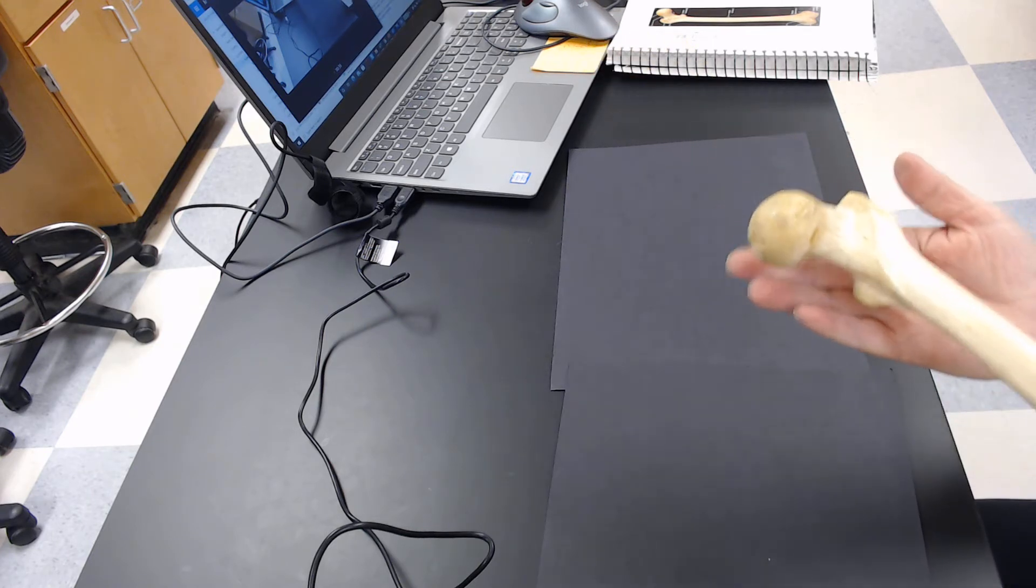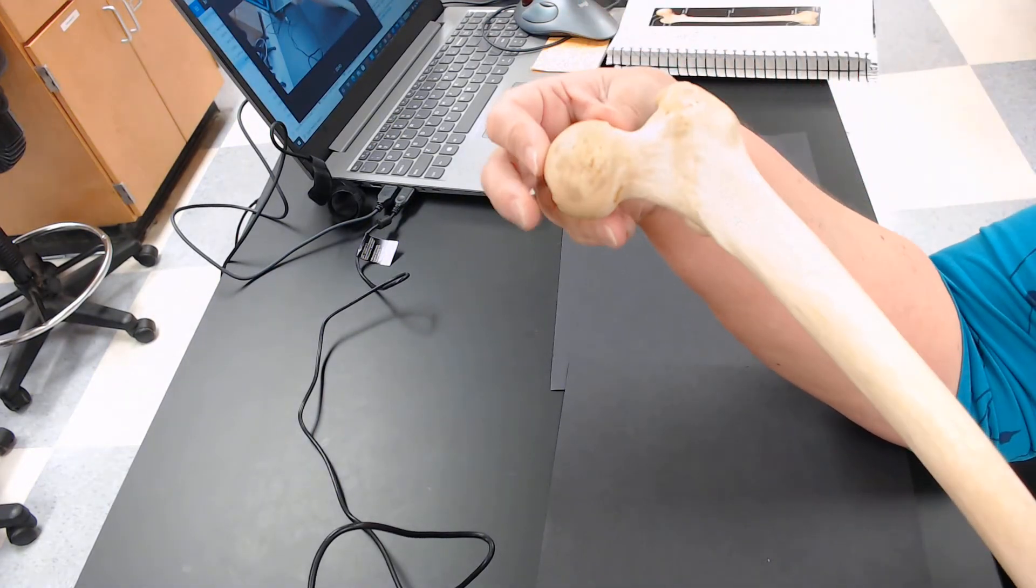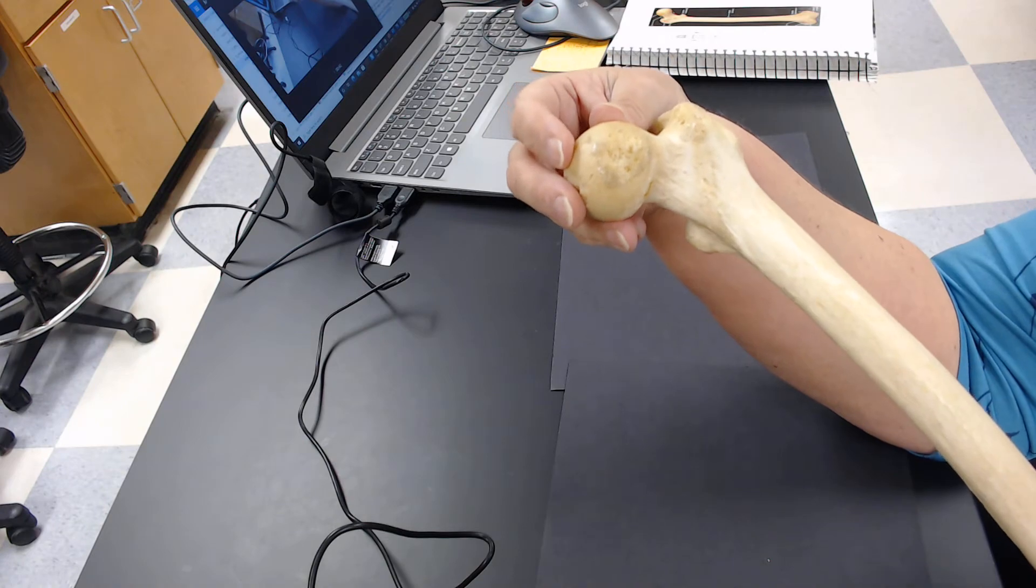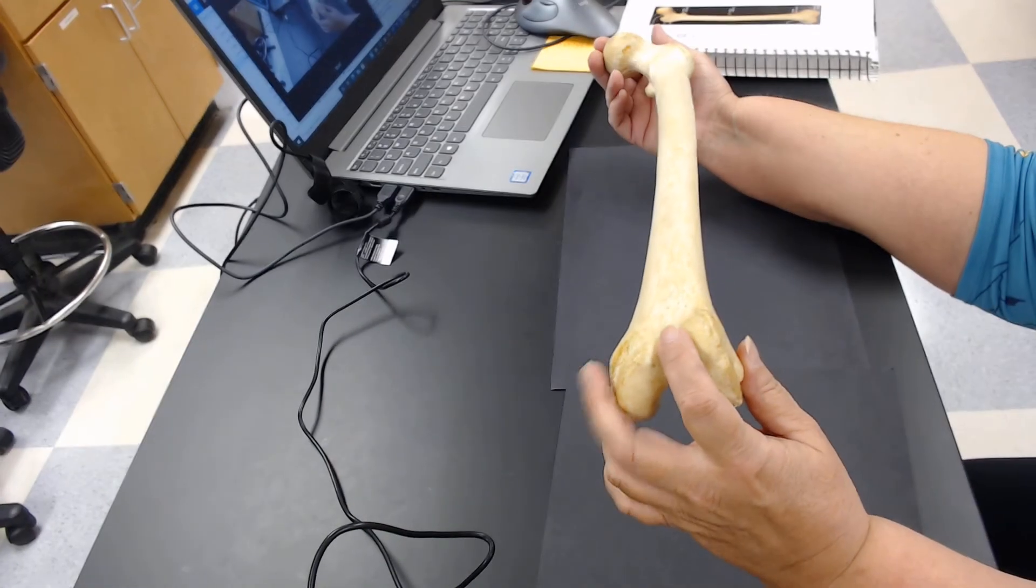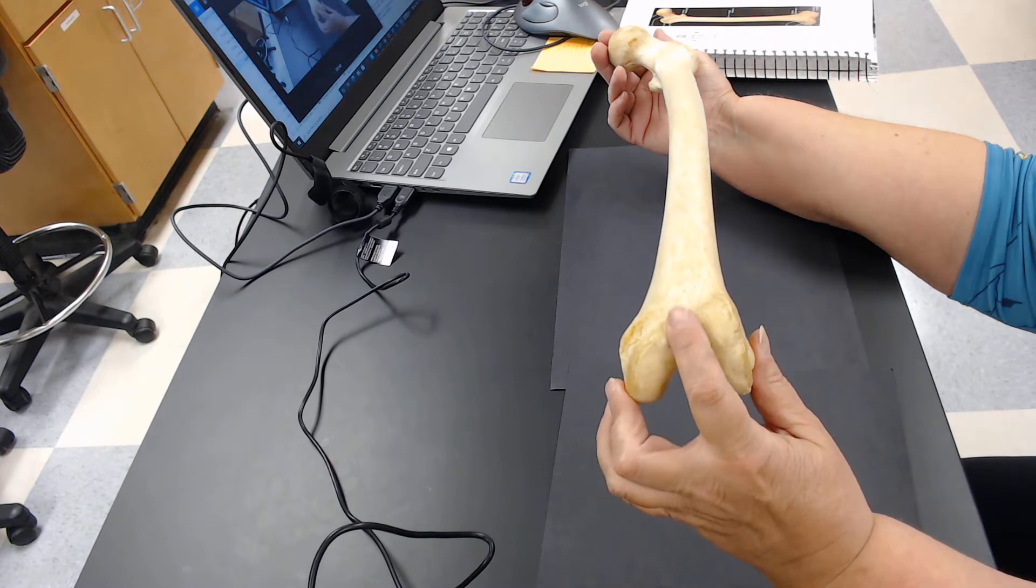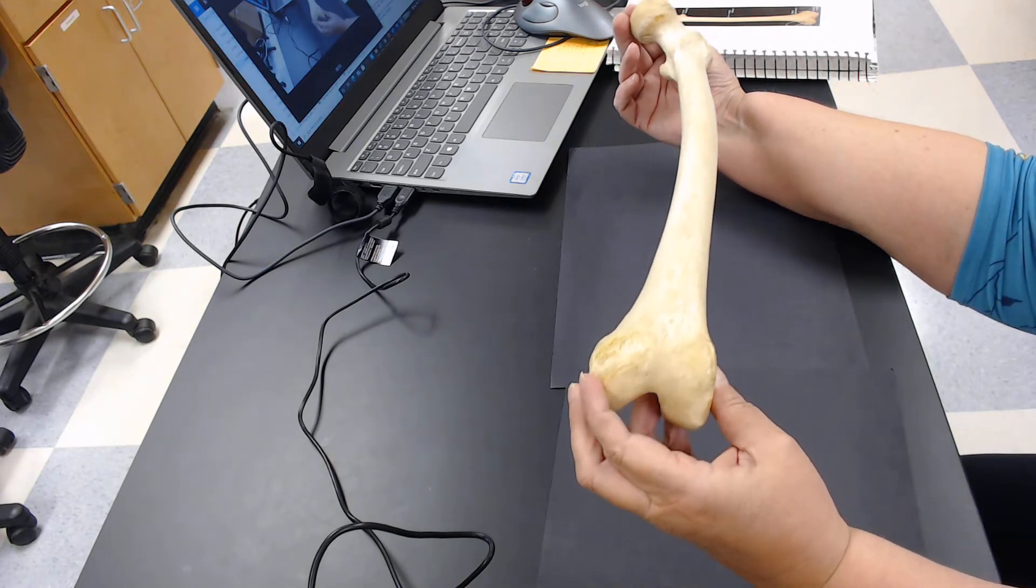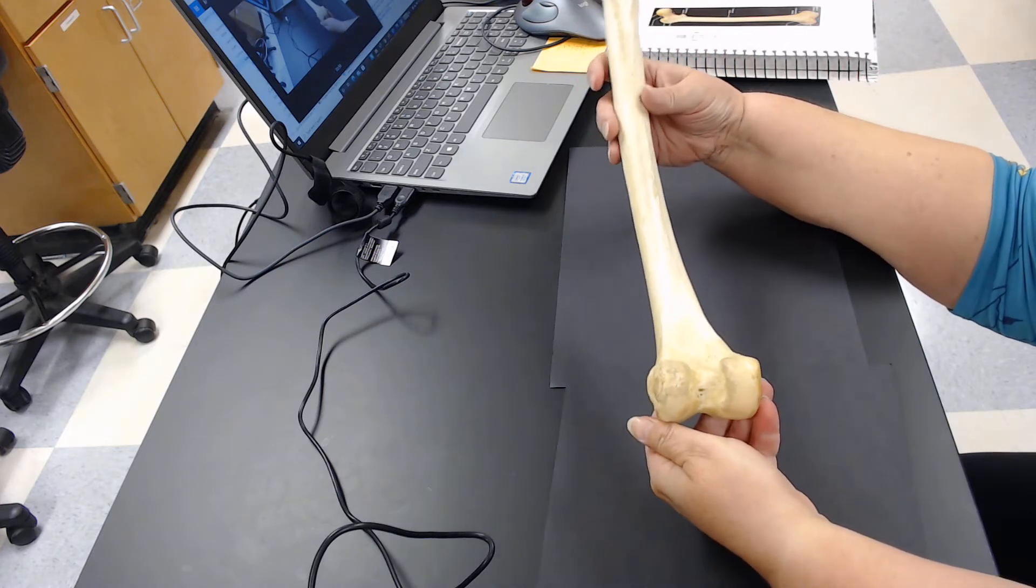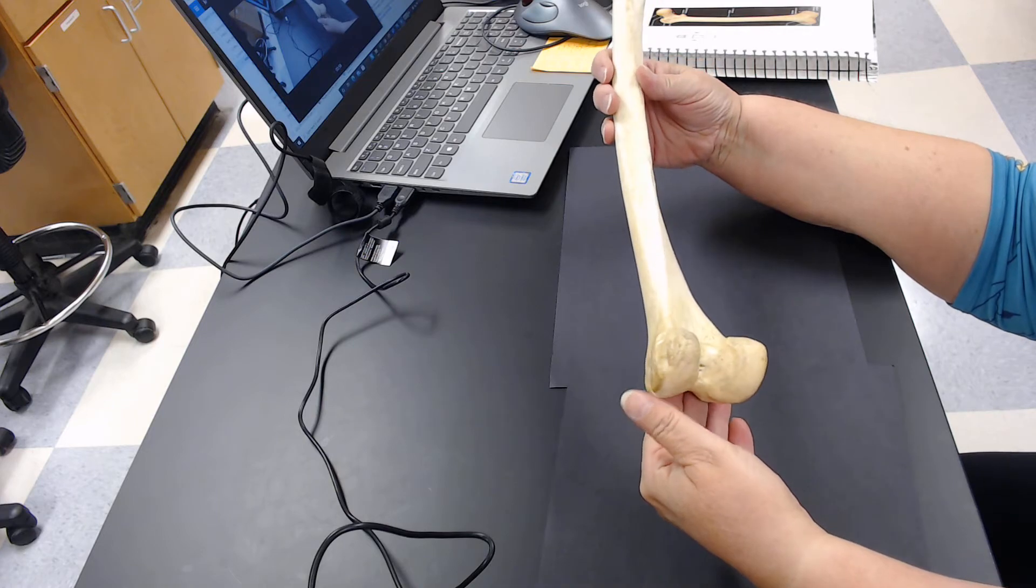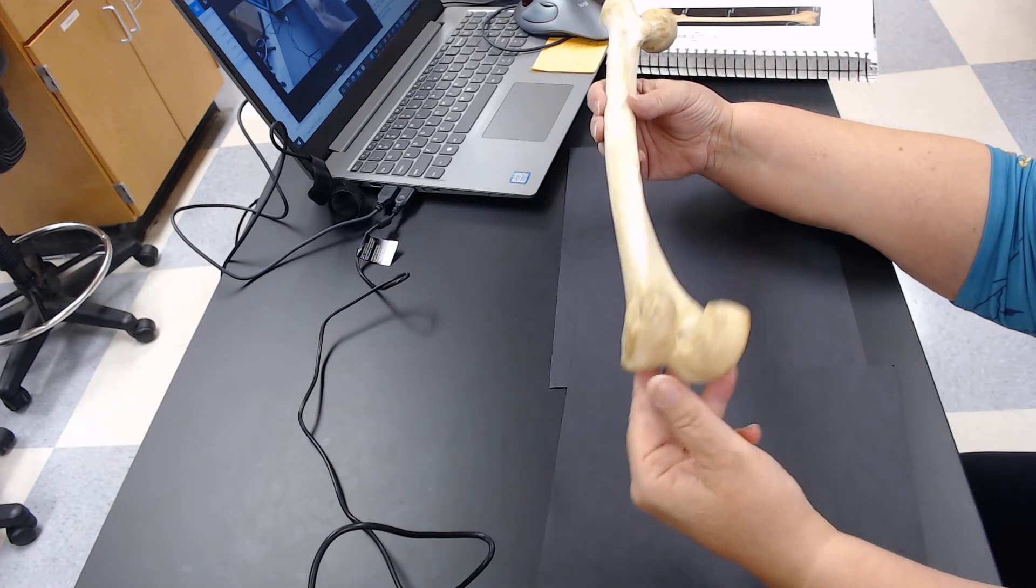Of course, we can tell that this is the lateral, this is the medial side, this is the head that will fit in the acetabulum, and here we know that this is the anterior side of the knee, this is the distal anterior side of the femur. If we flip it over, we see that the posterior side is quite different. We can see that there's a significant difference there.